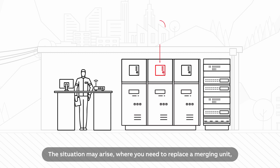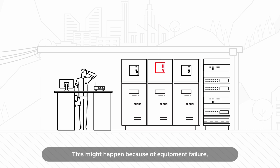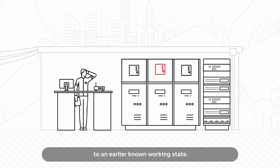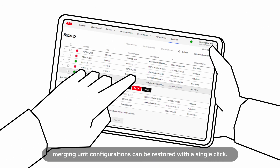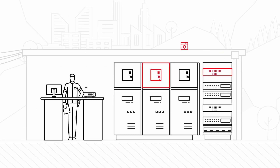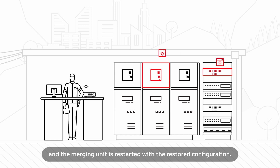The situation may arise where you need to replace a merging unit or you need to restore the configuration to an earlier state. This might happen because of equipment failure or when you need to restore the system to an earlier known working state. With a centralized approach, merging unit configurations can be restored with a single click. Simply use the SSC600 Web HMI's backup view. SSC600 then automatically ensures that the configuration is written correctly and the merging unit is restarted with the restored configuration.